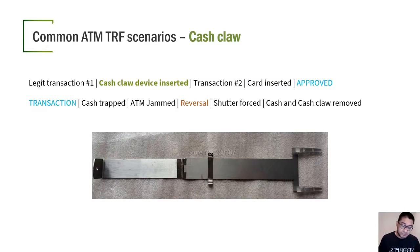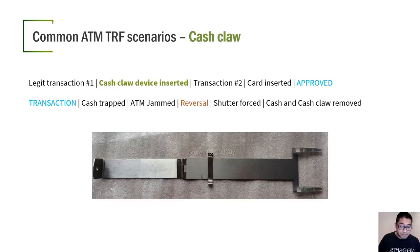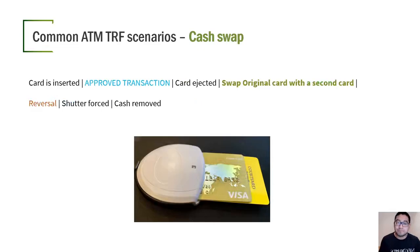Cash clown attacks use a specialized artifact and require two transactions. In transaction one, a small amount like $20 is requested. When the shutter opens, the attacker inserts a cash clown device, takes the money, and ends transaction one. Then transaction two begins requesting the maximum amount allowed. When that money is dispensed, it is trapped in the cash clown device, the ATM jams, a reversal occurs, the attacker forces the shutter, grabs the money and the cash clown device, and leaves.